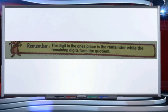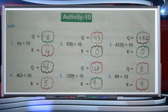In Activity 10, question number one: 64 divided by 10. When we divide 64 by 10, what is the remainder? The digit in the ones place is 4, so 4 is the remainder and 6 is the quotient.